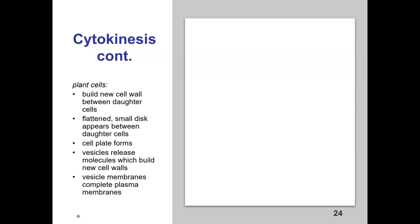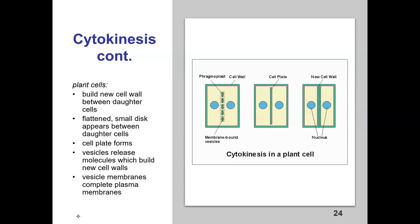In plant cells, a new cell wall forms. That cell wall forms from proteins produced and distributed by the Golgi, forming tiny little structures known as phragmoplasts. These eventually form a cell plate, and then the cell wall will form. So for cytokinesis in plant cells, we're building a cell wall using proteins inside the cell. The phragmoplast proteins form a cell plate, and then more proteins come and build up a new cell wall.